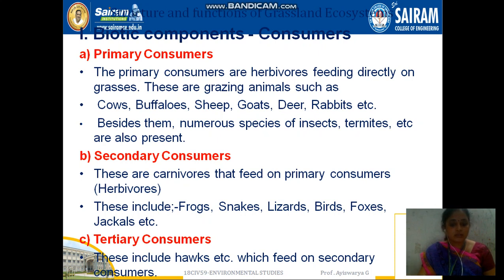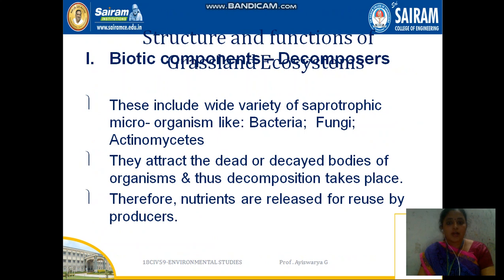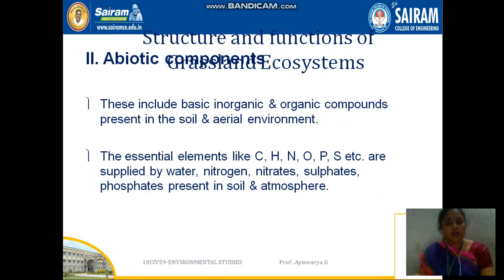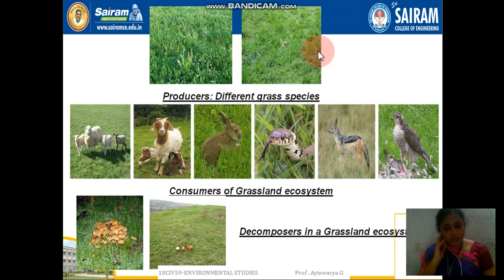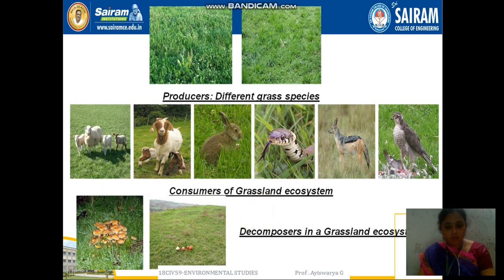Tertiary consumers feed on the secondary consumers. In the grassland ecosystem, decomposers are again bacteria and fungi. We have biotic and abiotic components — producers, consumers, and decomposers. Grasses are seen in the producer part, rabbits and snakes come under consumers, and mushrooms can be seen as decomposers.